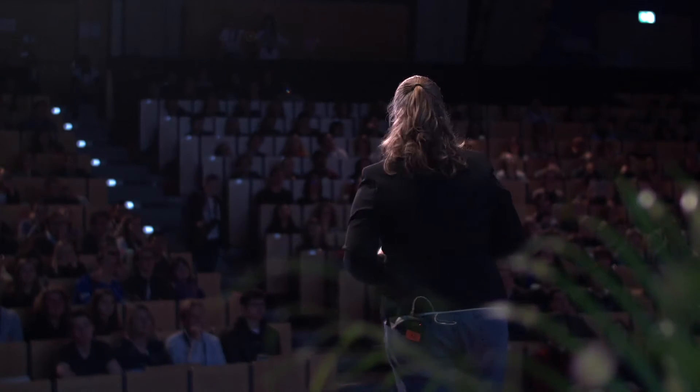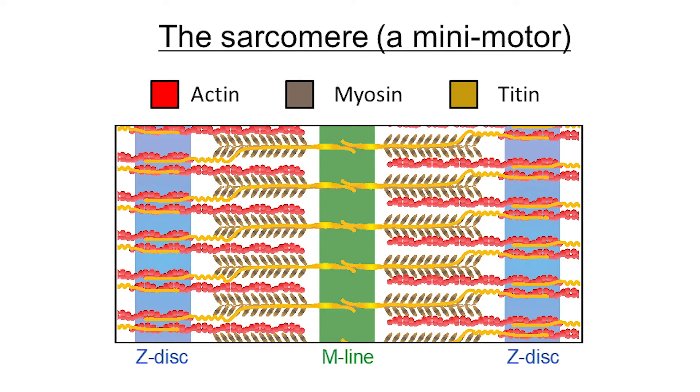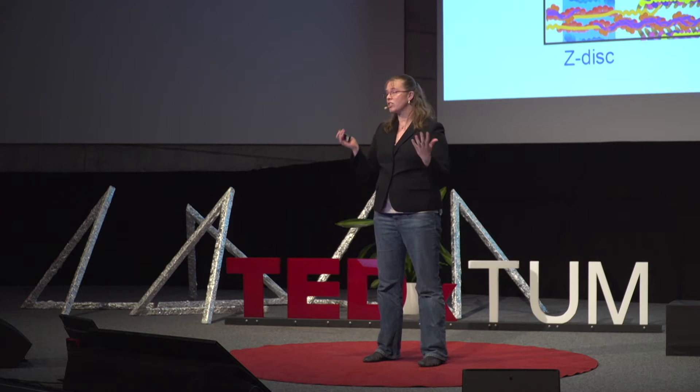Sarcomeres don't consist of just actin and myosin — they consist of multiple other proteins. One of these components that builds the sarcomere is called titin. Titin is a huge component. It spans all the way from the Z-disc to the M-line. It's thought to be a ruler that helps set how big the sarcomeres are going to be. It also has a spring region, and that spring determines how the muscle is able to contract. There are actually hundreds of other components that build a sarcomere — that influence where things attach, how they work, and that make this whole structure stable.